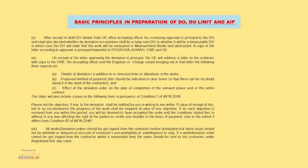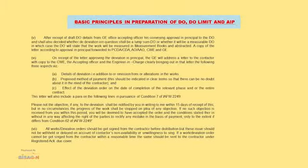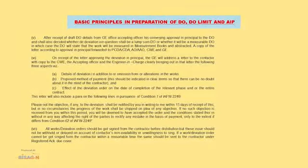On receipt of the letter approving the deviation in principle, the GE will address a letter to the contractor with a copy to the CW, the accepting officer and the Engineer-in-Charge, clearly bringing out the following three aspects: (A) detail of the deviation — addition to, omission from, or alteration in the work; (B) proposed method of payment; and (C) effect of the deviation order on the date of completion of the relative phase and/or the entire contract.